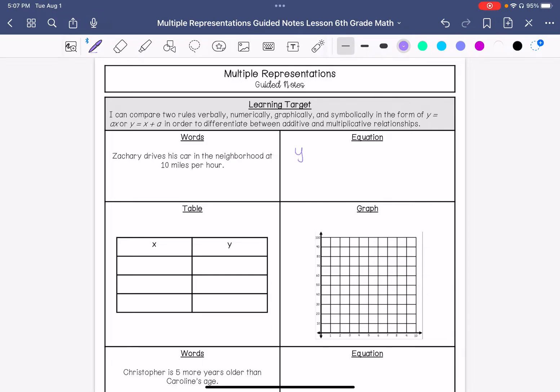I'm going to have y represent the miles traveled, because that is going to depend on his speed, and x is going to represent the hours he traveled. And my equation is going to be y equals 10 plus x.